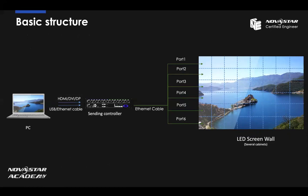Here, the control computer is connected to the sending card through the USB cable and Ethernet cable, so the PC can send control commands to the sending controller. The PC also connects with the sending controller through HDMI, DP, and DVI, providing the video source. The sending controller then connects to the LED screen video wall through Ethernet cables from multiple outputs, and the image is displayed on the LED screen. This is the basic structure of the entire LED control system: PC, sending card, Ethernet cable, and LED video wall.